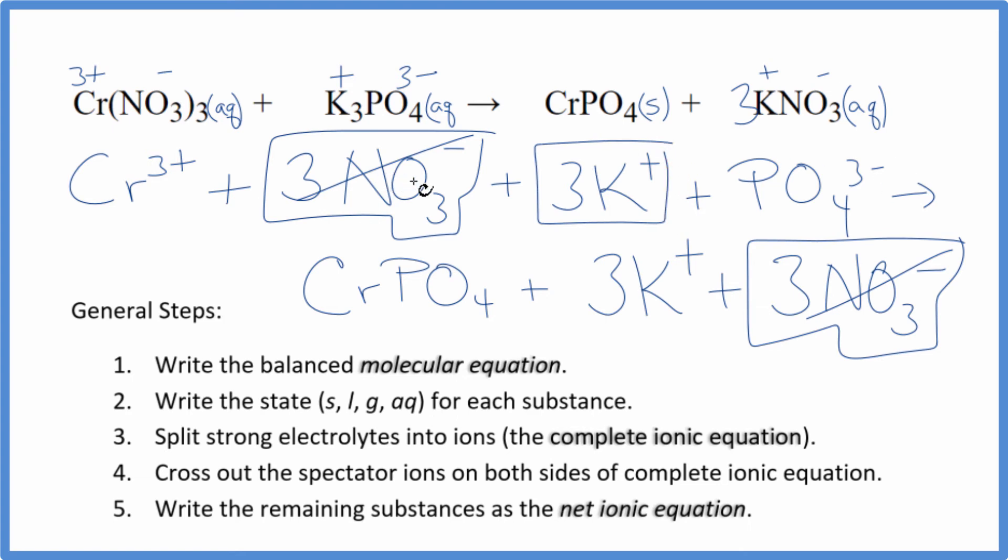Three potassium ions in the reactants and three in the products. Get rid of those. What's left, that's the net ionic equation here for chromium three nitrate plus potassium phosphate. I'll clean it up, write the states. We'll have our net ionic equation.